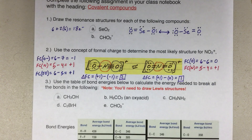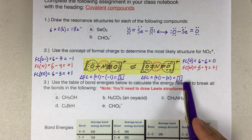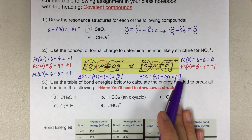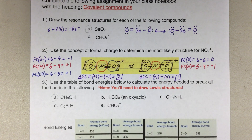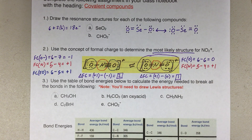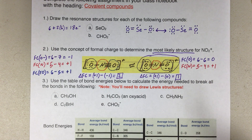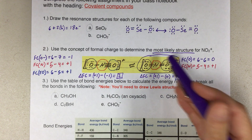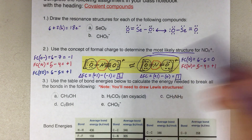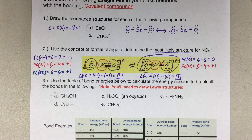Now we compare the two delta fc values: two for the first structure, one for the second. The closer the delta fc is to zero, the more stable the structure. Between two and one, the second structure's delta fc of one is closer to zero, which means it is the more likely structure. On a test or quiz, make it clear which one you choose — you can circle it or write 'this one's better' — but you need to actually answer the question.